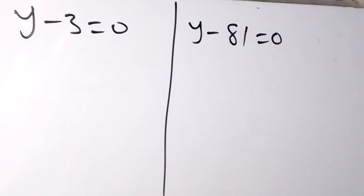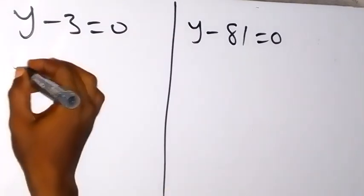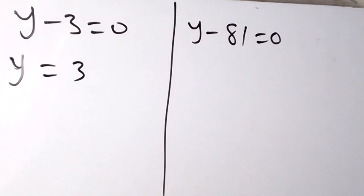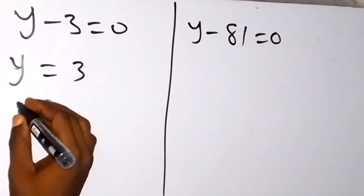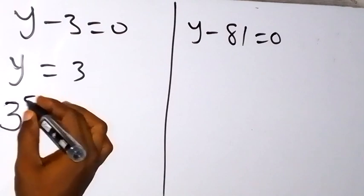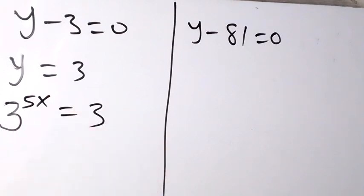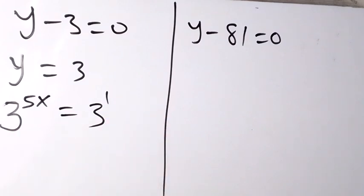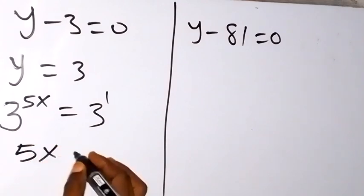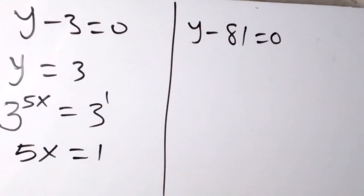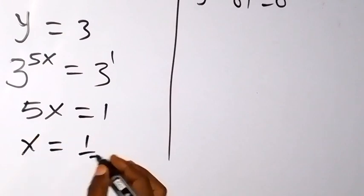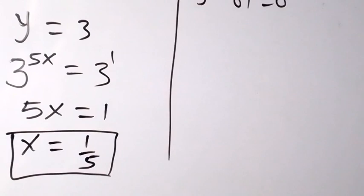The solutions are y minus 3 equals 0, or y minus 81 equals 0. From y equals 3, and recalling that y equals 3 raised to the power 5x, we have 3 raised to the power 5x equals 3, which is 3 raised to the power 1. Equating powers: 5x equals 1. Dividing both sides by 5 gives x equals 1 over 5.